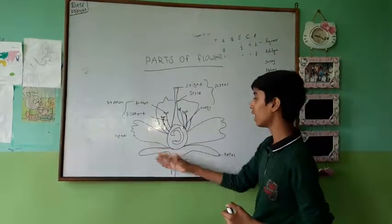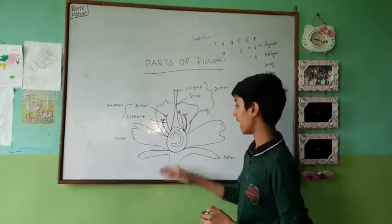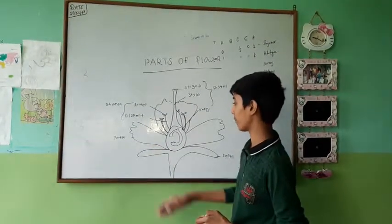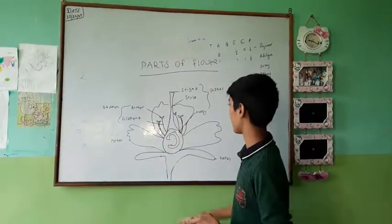Petal. It is the colorful part of the flower. It attracts insects.